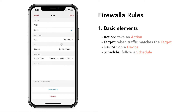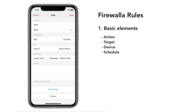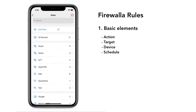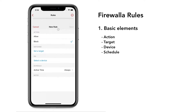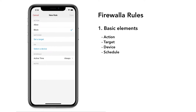Let's take this example. We want to block YouTube on Bob's iPhone between 9 p.m. to 7 a.m. on weekdays. Tap on Add Rule. For action, we select Block.